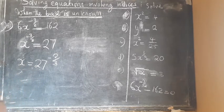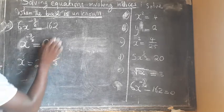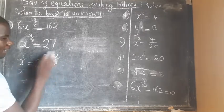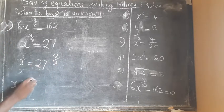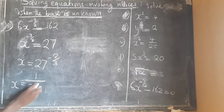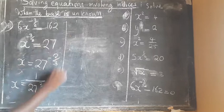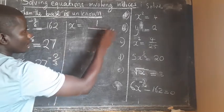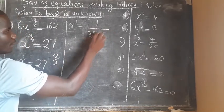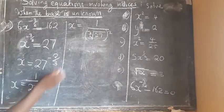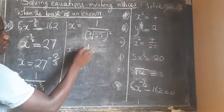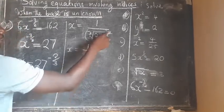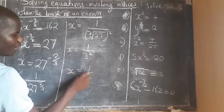The multiplicative inverse of negative two over three is negative three over two — that is very important. Because the index is negative, we introduce one: we write one over twenty-seven, then raise to two over three. This was covered in a previous lesson. We proceed: x equals one over twenty-seven to the power two over three. This becomes one over the cube root of twenty-seven, then squared. The cube root of twenty-seven is three, so we get one over three squared.